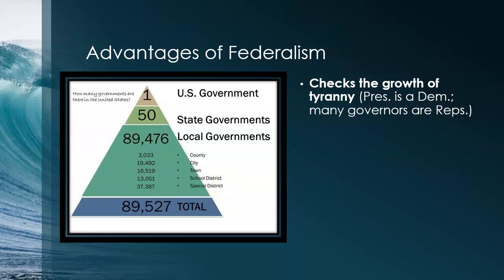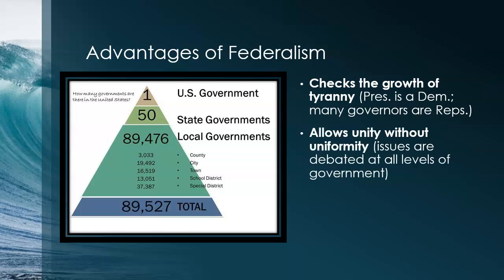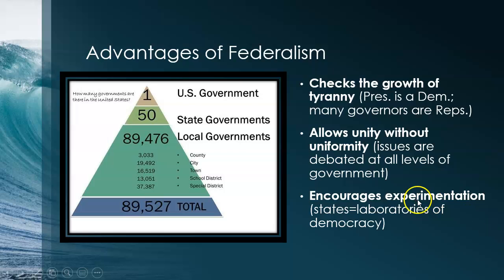There are so many governments, and it's supposed to check the growth of tyranny. If you divide up the powers of government among state, local, and federal governments, it allows unity without uniformity. Issues are debated at all levels of government, so you get a lot of ideas from states and local governments that the federal government takes up. It dilutes power — keeps the federal government from becoming too powerful, keeps the state governments from becoming too powerful, and keeps local governments in check. It's a nice balance, and it encourages experimentation.